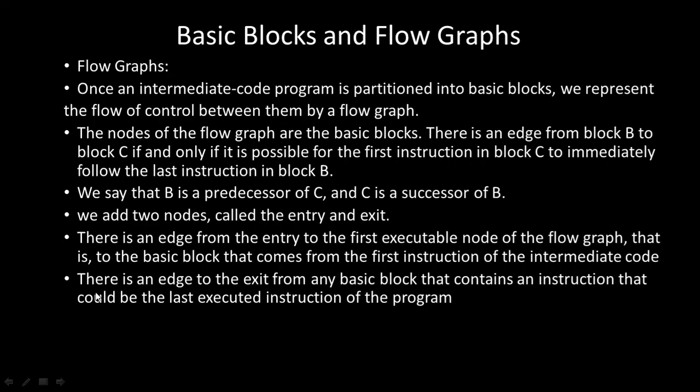Now, how do we construct the flow graphs? Once an intermediate code program is partitioned into basic blocks, we represent the control flow between them by a flow graph. The nodes of the flow graph are the basic blocks. There is an edge from block B to block C if and only if it is possible for the first instruction in block C to immediately follow the last instruction in block B. We say B is a predecessor of C and C is a successor of B. We also add two special nodes: an entry node and an exit node.